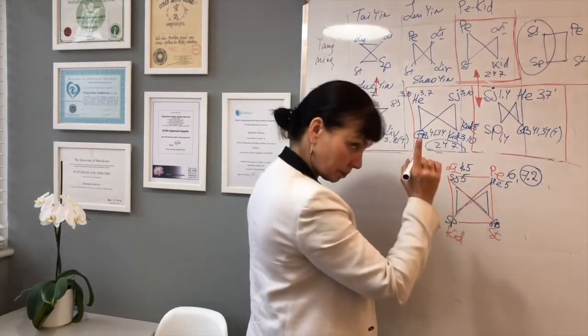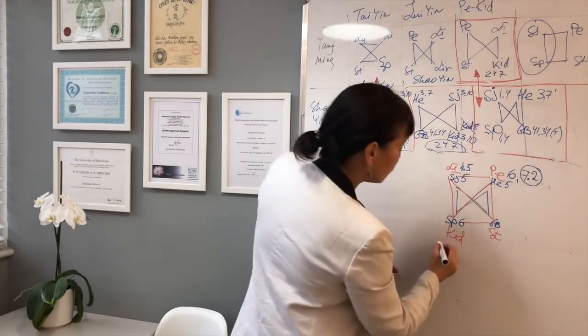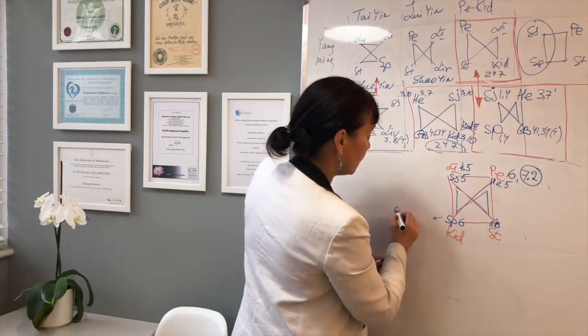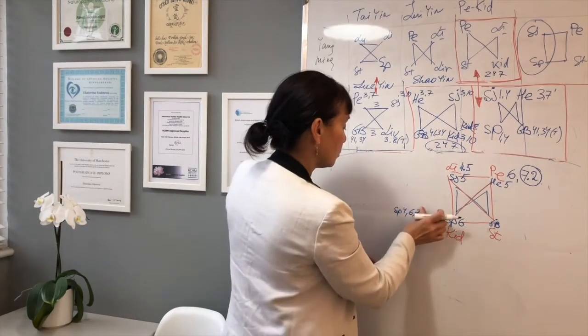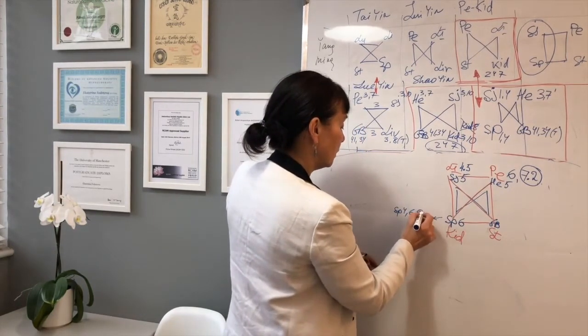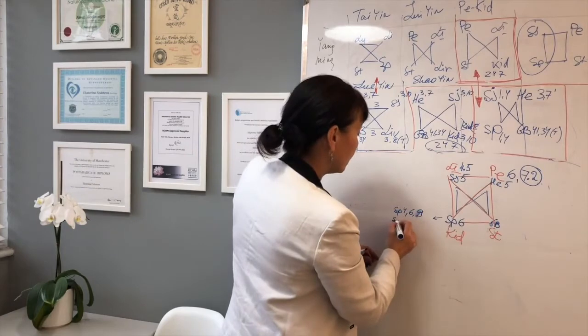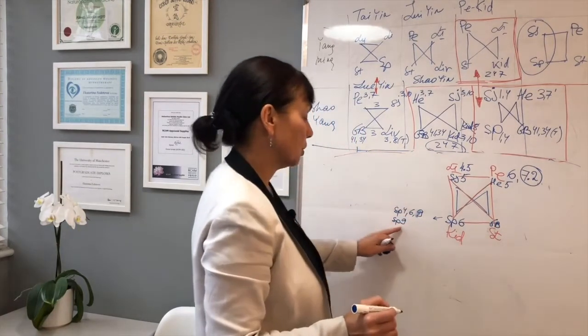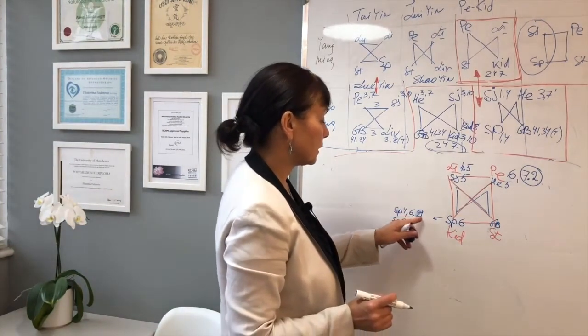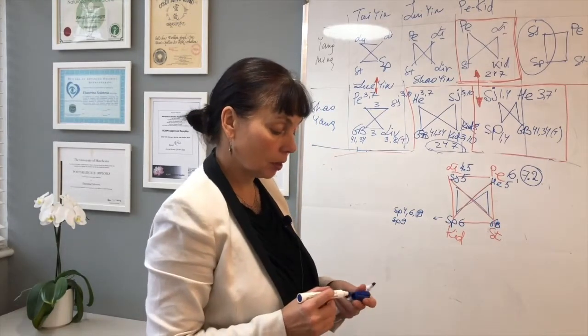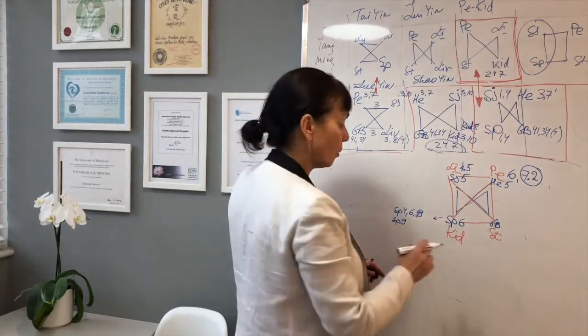Spleen. We can choose either 6. I often do here, spleen 4, 6 and 9, all together. Or you can choose spleen 9 if there's dampness involved. But usually I do 4, 6, 9. Spleen 6 is one of the best points for any gynecological disorders. But the 3, they create like a wall on the channel.